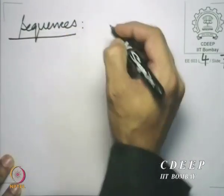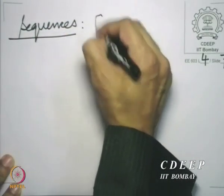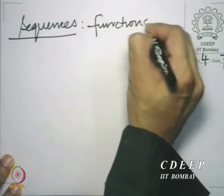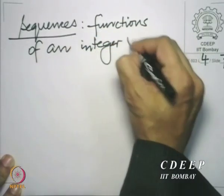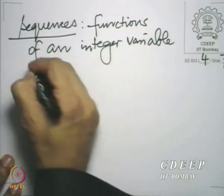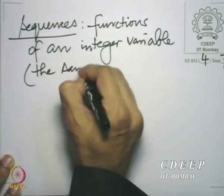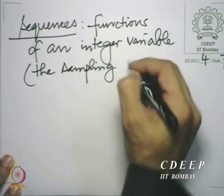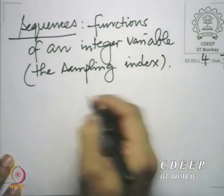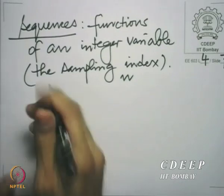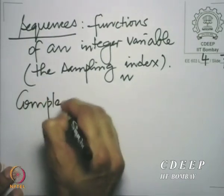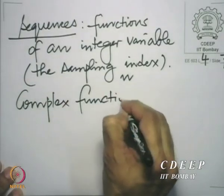Sequences are essentially functions of an integer variable, and the physical interpretation of the integer variable is the sampling index. We need to qualify whether we are talking about real functions or complex functions — we are going to allow complex functions, and the natural question is: what is the physical meaning of a complex function?